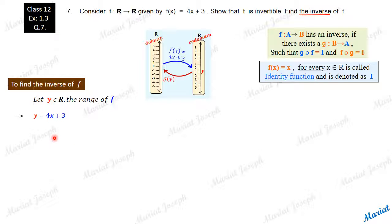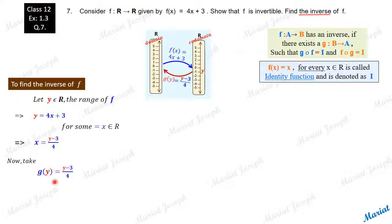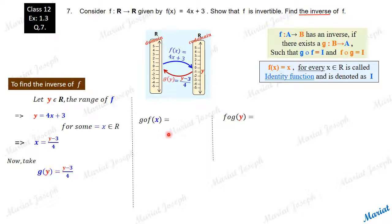Treat this rule as g(y) = (y − 3) / 4. This must be the inverse function, but it needs to be verified. Will this g function defined from codomain to domain satisfy the two conditions: gof = identity and fog = identity? Let us cross check.